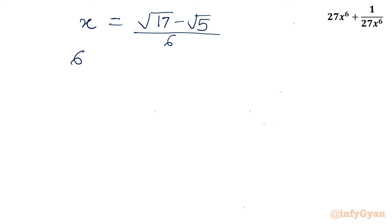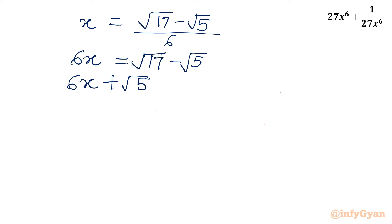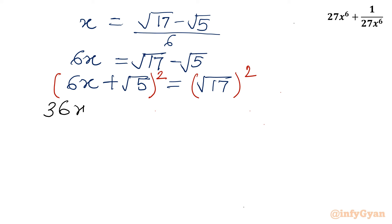Multiplying both sides by 6: 6x equals root 17 minus root 5. Now I will add root 5 to both sides, so 6x plus root 5 equals root 17. Now I will square both sides, using the identity (a + b)² = a² + 2ab + b². So I will write 36x² plus 5 plus 12·root 5·x, and on the right hand side 17.